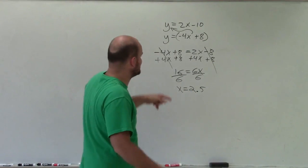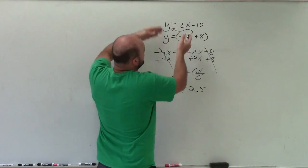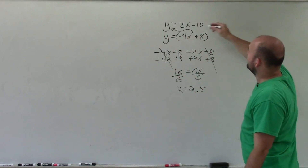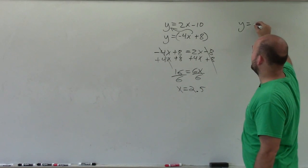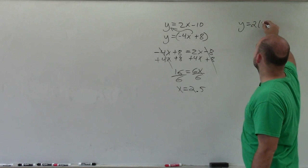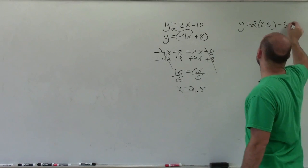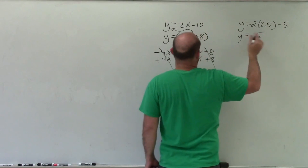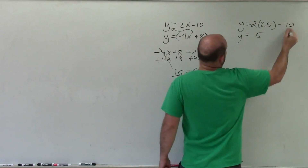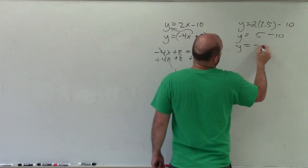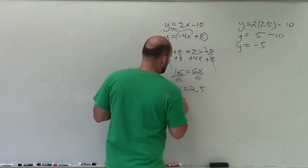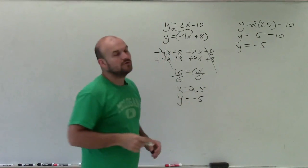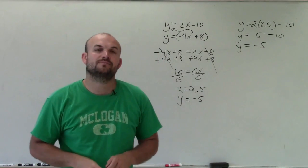To solve for y, I take x equals 2.5 and plug it into one of the equations. Using y equals 2 times 2.5 minus 10: 5 minus 10, so y equals negative 5. Therefore the solution set is x equals 2.5 and y equals negative 5.